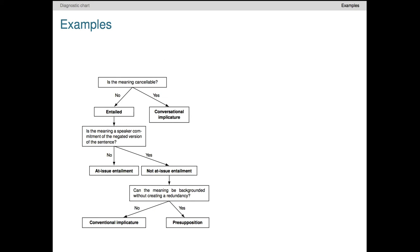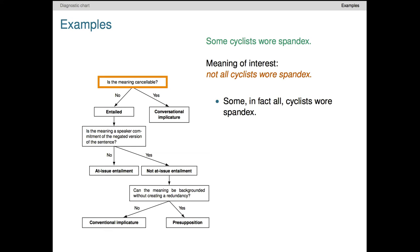Let's now work through some examples. On the left is the flowchart we just looked at. Our first example is 'some cyclists wore spandex,' and the meaning we want to study is the proposition that not all cyclists wore spandex. This seems to come across when we utter the original sentence, but what kind of meaning is it?